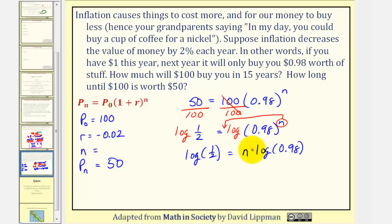And now to solve for n, because this is a product, we can just divide by log(0.98). So this simplifies to 1, so we have n, it's going to be approximately equal to this quotient here, let's round to the nearest hundredth. So we'll go back to the calculator.